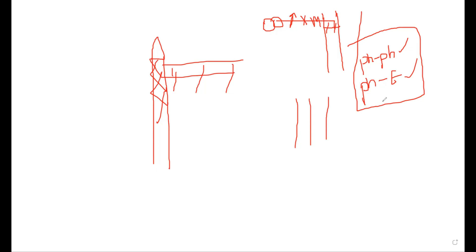These phase to phase and phase to earth clearances depend upon the basic lightning impulse level and basic switching impulse level of my substation. These phase to phase and phase to earth clearances depend upon my BIL and BSL levels of my substation.